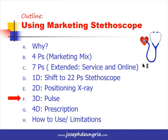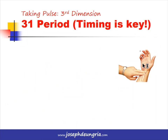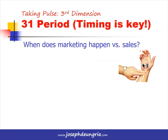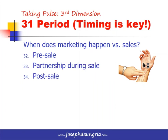The third dimension of the marketing stethoscope is the Pulse. You take the pulse of a person to determine the number of heartbeats, their intensity, and timing — and this is also true for marketing, where we look at the period or timing. Marketing happens before the sale, during the sale, and after the sale, so marketing is a continuous process that doesn't stop. When planning, we must consider the past, the present, and the projected future.